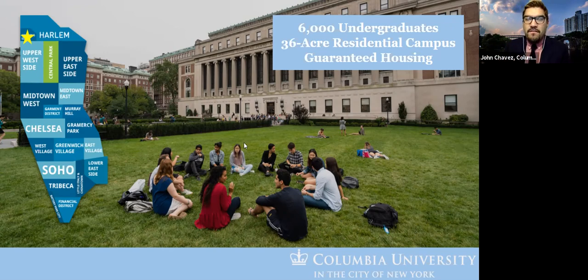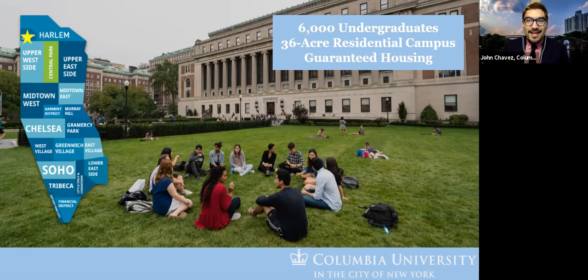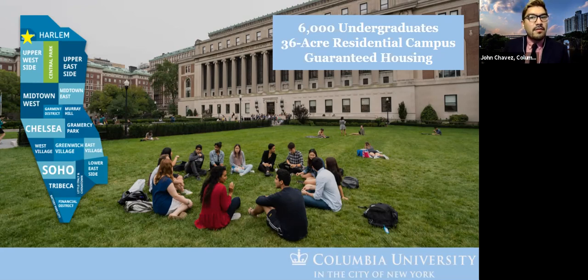All students live on campus for all four years. We have about 6,000 undergraduates — 4,500 in Columbia College and 1,500 in Columbia Engineering. We require all first-years to live in first-year residence halls, and almost all upperclassmen live in upperclassmen residence halls as well. You get the best of both worlds: a traditional residential campus within the dynamic city of New York.